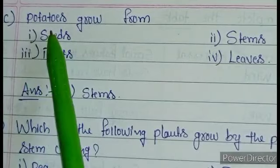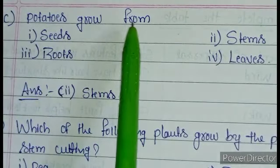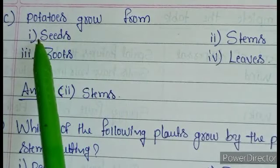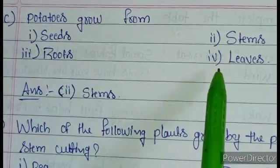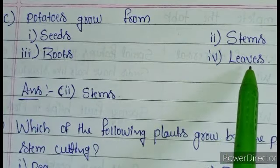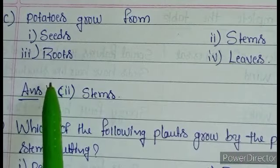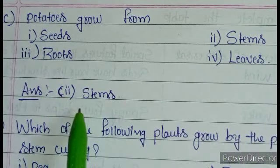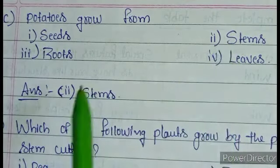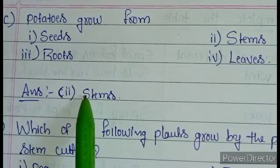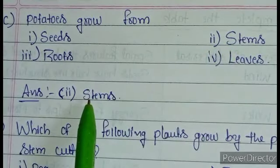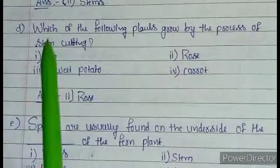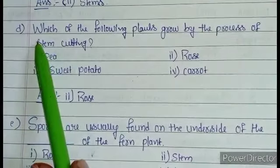Question C: potatoes grow from — first option seeds, second option stems, third option roots, fourth option leaves. The correct answer is stems. Potatoes are underground stems, so the second option, stems, is correct.